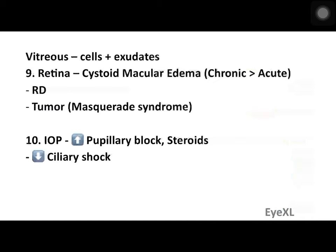Examination of the vitreous may reveal cells and exudates — more often in intermediate and posterior uveitis, but anterior uveitis by extension may show some features. The retina may show cystoid macular edema, more common in chronic cases. Other retinal features include retinal detachment or a tumor acting as a masquerade syndrome — the tumor hiding behind uveitis clinically. Intraocular pressure may rise (due to pupillary block from seclusio pupillae or topical steroids) or fall (in ciliary shock, where the ciliary body stops producing aqueous humor).